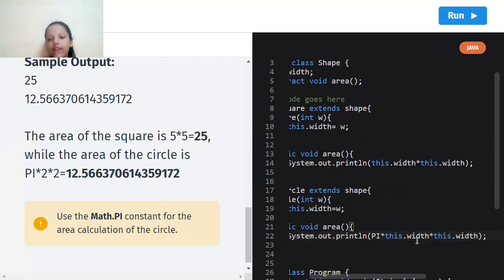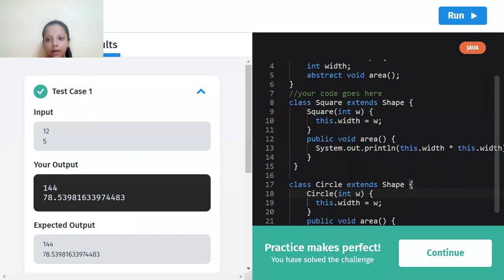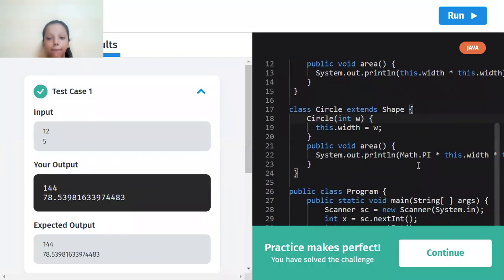So yeah, now let's run the code to see whether it works or not. One mistake made by us is that pi is not simple pi. The symbol for pi is Math.PI.